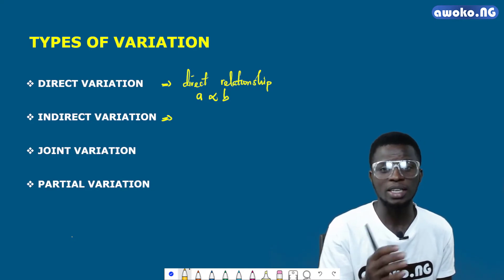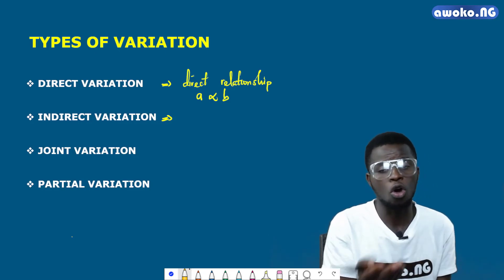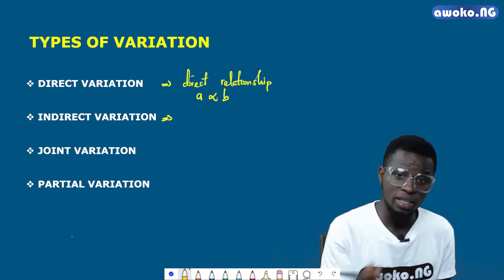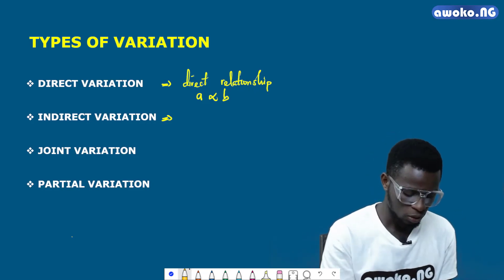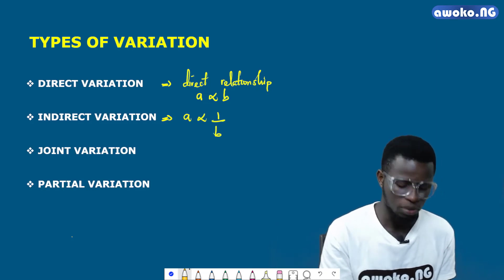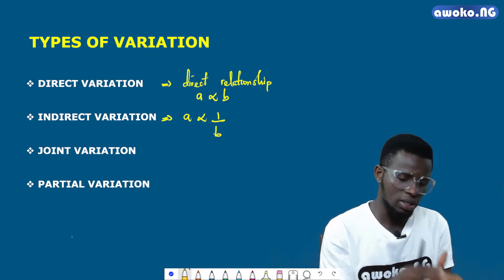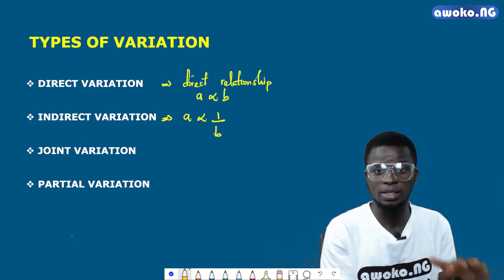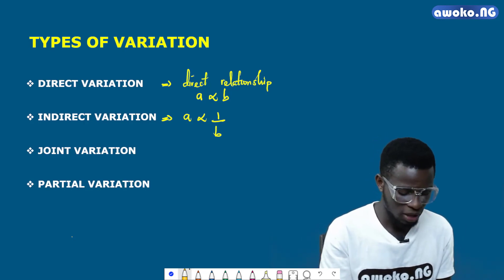The second type is indirect variation, sometimes called inverse variation. It shows the indirect relationship between two or more quantities. For example, if we say A varies inversely as B, the mathematical implication is that as quantity A increases, quantity B decreases, and vice versa — if quantity A decreases, quantity B will increase.